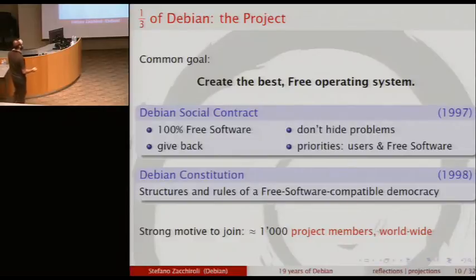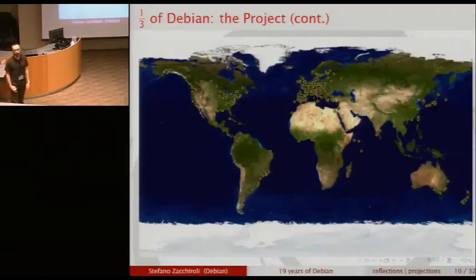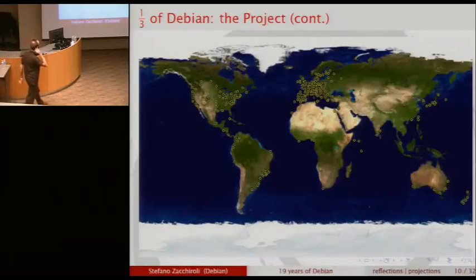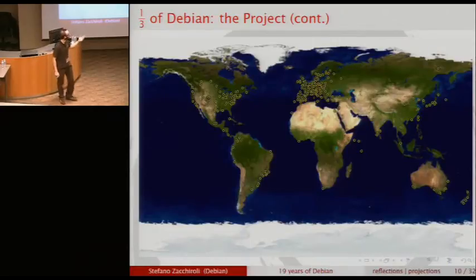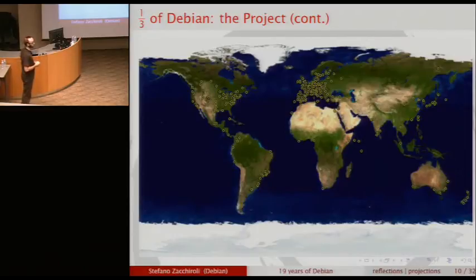In terms of project members — people who have committed to the project and abide by the constitution — we have something like 1,000 members worldwide. We basically follow the distribution of IT in the world: high density of Debian developers in Europe and the US, and growing density in Australia, South America, India, and East Asia. This is really a worldwide project; it's been incredible to know people from everywhere around the world thanks to Debian.